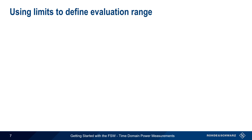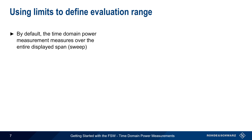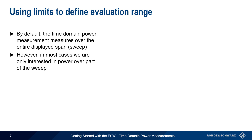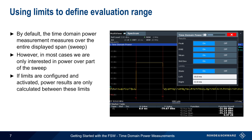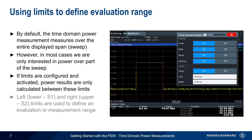Triggering the signal and using an offset are important, because by default time domain power measurements measure over the entire displayed span or sweep. However, in the vast majority of cases we're usually interested in measuring power only over part of the sweep, and creating a sweep to exactly match that area or region can be quite challenging. Therefore, limits can be created and activated in order to measure only over a user-defined time range. A left and right limit are entered as times, and this becomes the evaluation or measurement range.